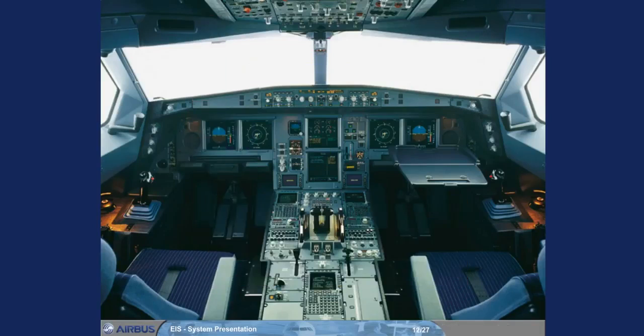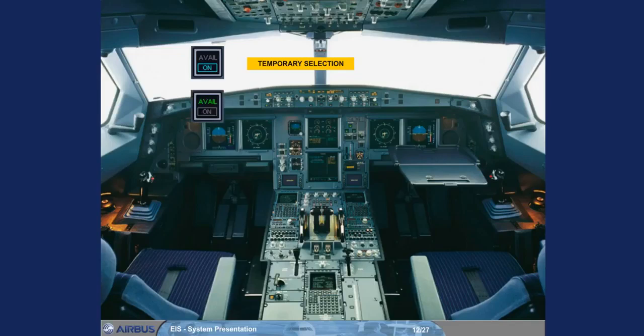There are some switches on the overhead panel which are used on a temporary basis, or may have an indication of their state. The logic is: temporary selection for operational reasons — a blue ON light, for example anti-ice; and applicable system status — a green light, for example APU available. You will see this philosophy demonstrated throughout the course.